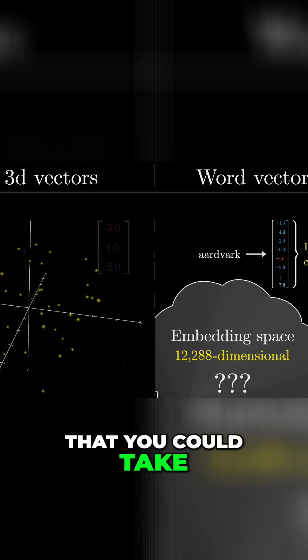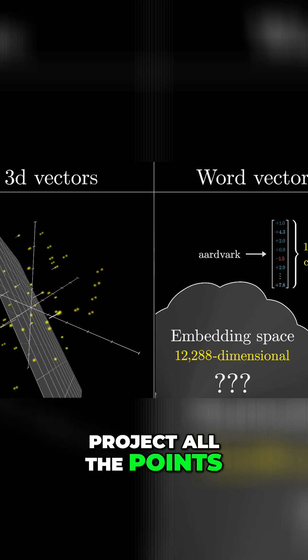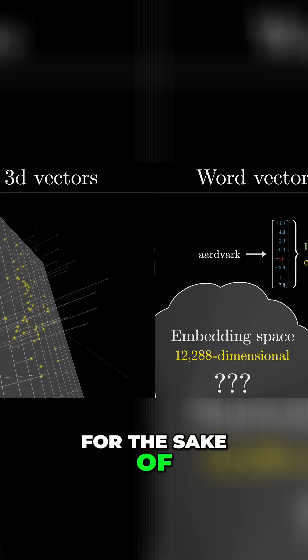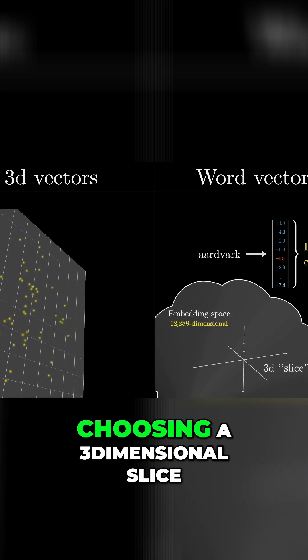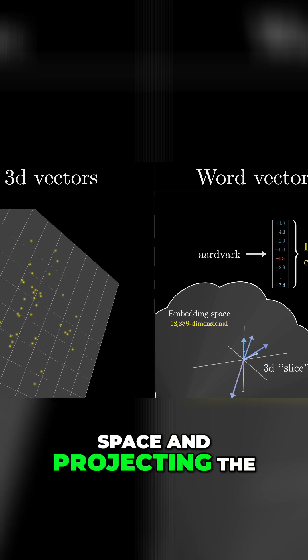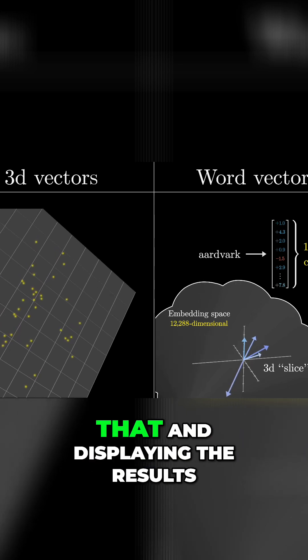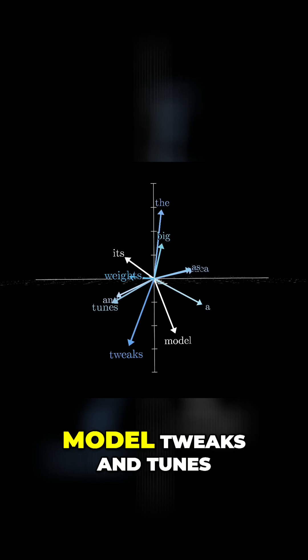In the same way that you could take a two-dimensional slice through a 3D space and project all the points onto that slice, for the sake of animating word embeddings that a simple model is giving me, I'm going to do an analogous thing by choosing a three-dimensional slice through this very high-dimensional space and projecting the word vectors down onto that and displaying the results.